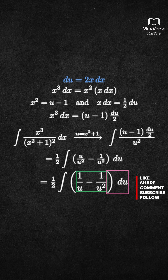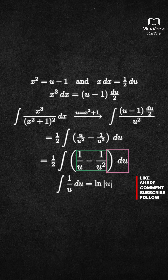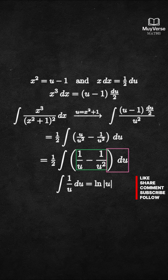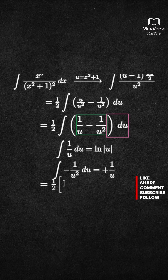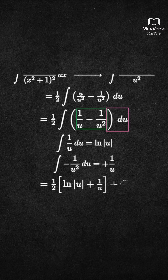Integrate term by term. The integral of 1 over u is the natural log of the absolute value of u. The integral of negative 1 over u squared is plus 1 over u. Altogether, we get 1 half times [ln|u| + 1 over u] plus C.